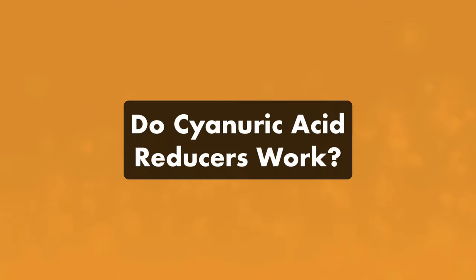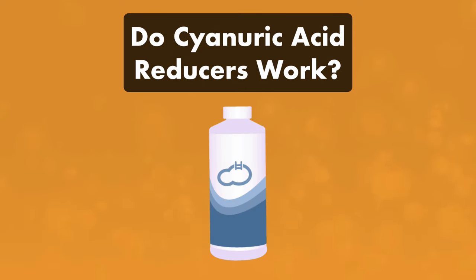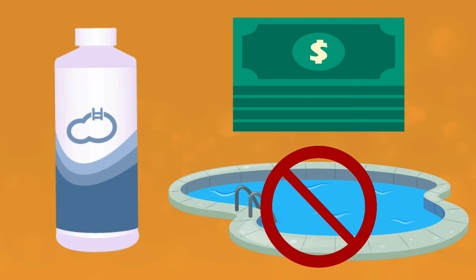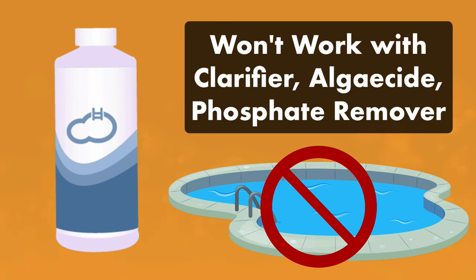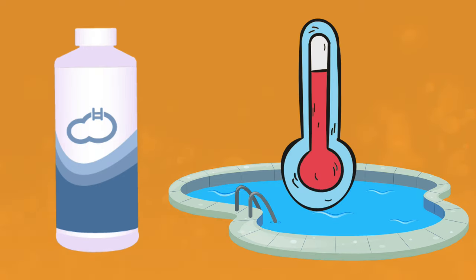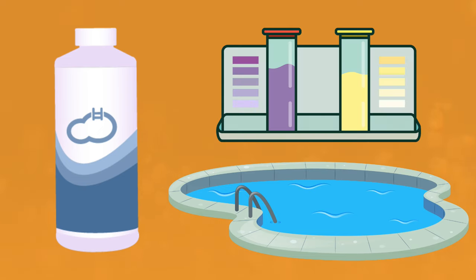What about using cyanuric acid reducers? While these chemicals are an alternative to draining and refilling your pool, they tend to be expensive and don't work for every pool owner. Cyanuric acid reducers won't work if you've added clarifiers, algaecides, or phosphate treatments to the pool in the past week. You'll also need your pool water to be at least 65 degrees Fahrenheit, and your other pool chemicals, like pH and total alkalinity, should be in range before using.